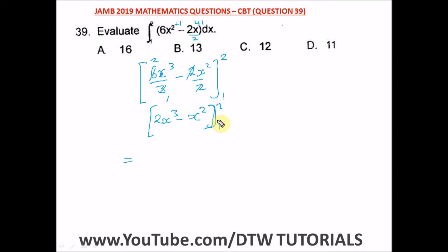Let's put in our upper and lower limits. We have bracket 2 raised to power 3 minus 2 raised to power 2, close the bracket, minus bracket 2 times 1 raised to power 3 minus 1 raised to power 2.